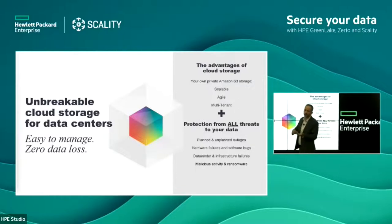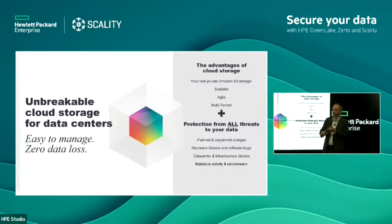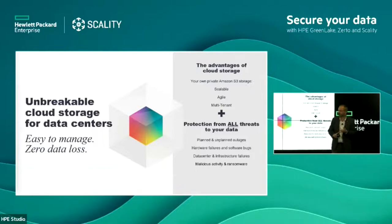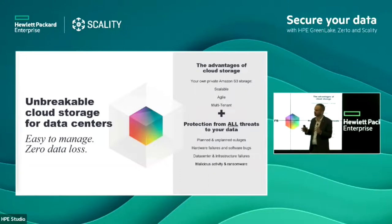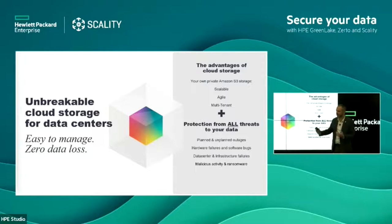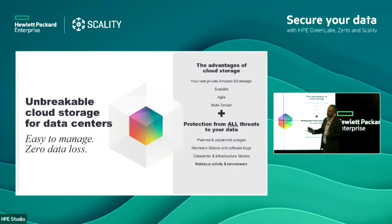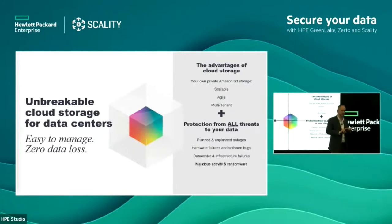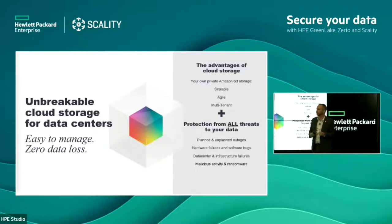What we provide when combining Scality and HPE is unbreakable cloud storage. It has cloud functionality, being flexible across any x86 server generation — no migrations to worry about, self-healing, easy management, multi-tenanted — your own private AWS S3 storage, but on-premises. We also support file and S3 workloads on the same platform. Combined with protection against hardware failures — no single point of failure — and with features like S3 object locking, we can protect against malicious activity and ransomware. We provide a secure place to store Zerto journal archives for extra protection.